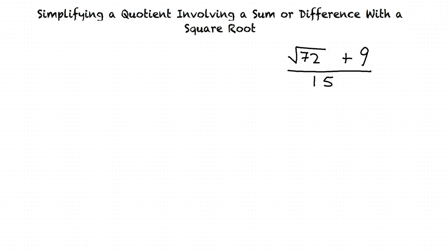The square root of 72 plus 9, all divided by 15. Our goal is to simplify this as much as possible.